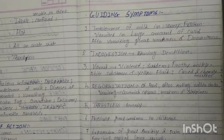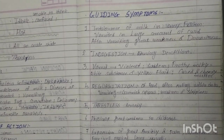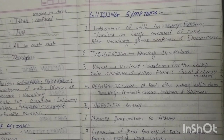Therefore, when the baby has mainly intolerance of milk, it causes vomiting, because the stomach is affected by the poisonous effect. That is why we give this medicine.